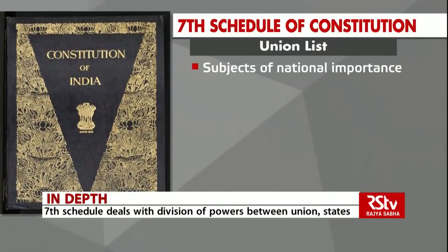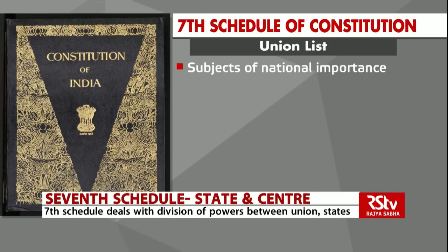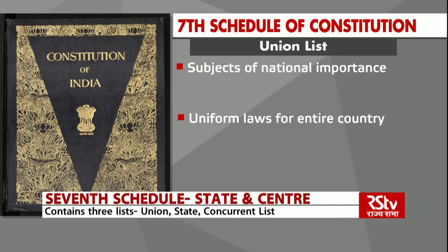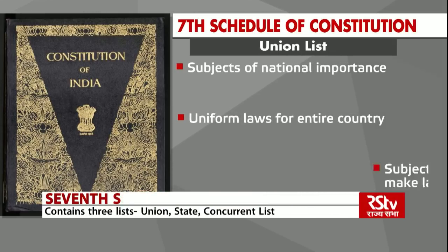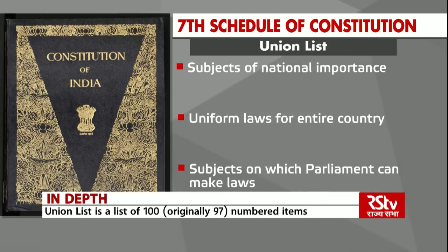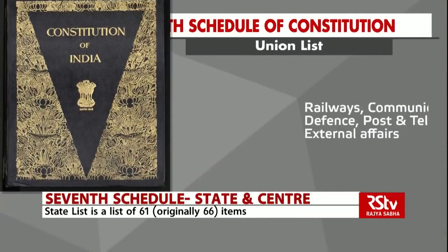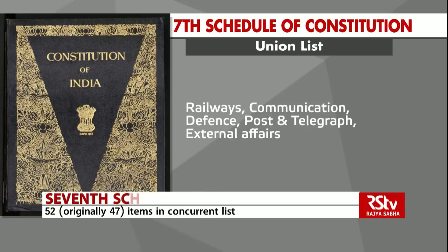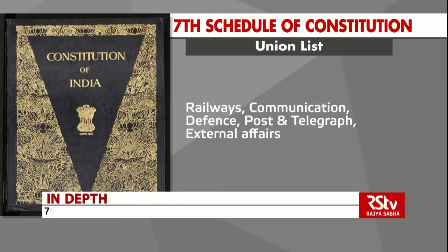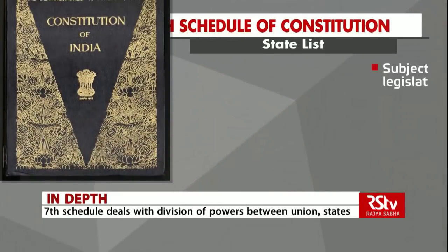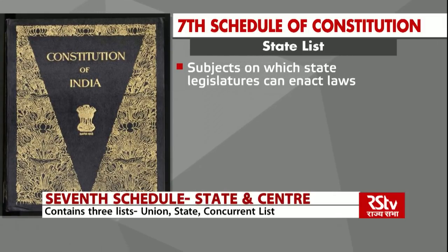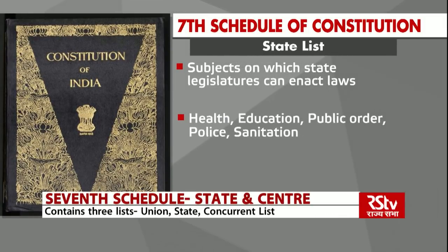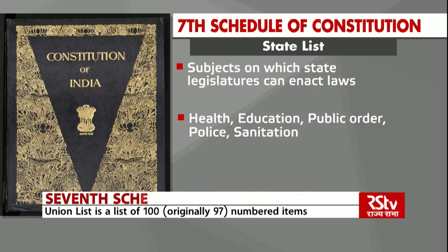The Union List comprises subjects of national importance and admits uniform laws for the whole country. This list contains subjects on which the Parliament can make laws, for example Railways, Communication, Defence, Post and Telegraph, External Affairs, etc. The State List contains the subjects on which the State Legislature can enact laws, for example Health, Education, Public Order, Police, Sanitation, etc.